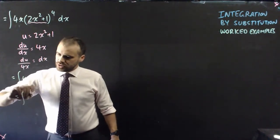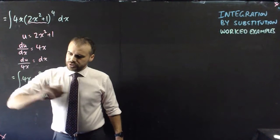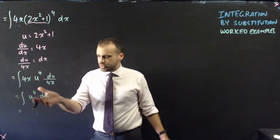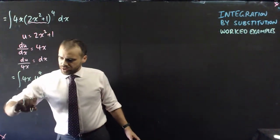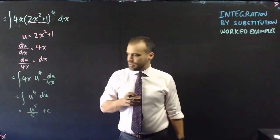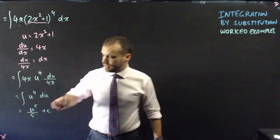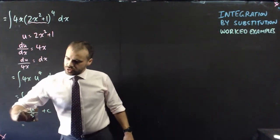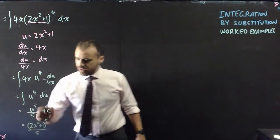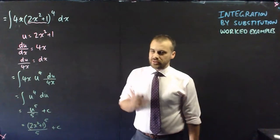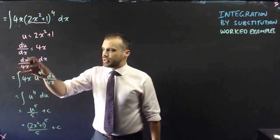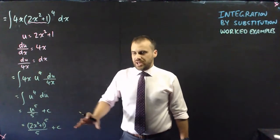We have 4x times u⁴ with respect to u, divided by 4x — the 4x's cancel out — and we end up with ∫u⁴ du. Integrating that: increase the power by 1 and divide by the new power, giving u⁵/5 + C. Substituting u back in: u = 2x²+1, so the answer is (2x²+1)⁵/5 + C.